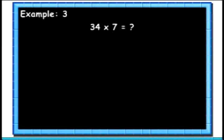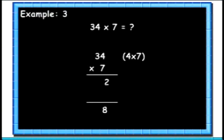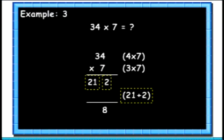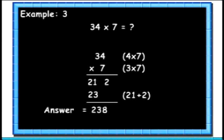Let's see another example. Now we will multiply 34 with 7. First multiply 4 and 7 — we get 28. Write the 8 below and carry forward the 2. Then multiply 3 and 7 — we get 21. Now add the 2 with the 21 to get 23. Join this 23 to the existing 8. The result is 238.